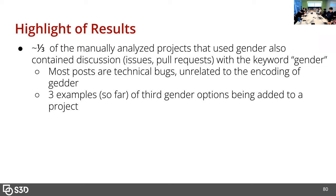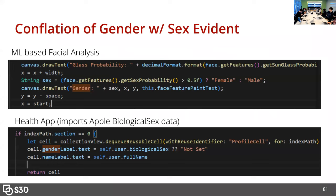Maybe I'll find more. My goal from here is to take what I learned from the false positives and try to automatically cut down the rest of the sample into just examples of gender-related code.